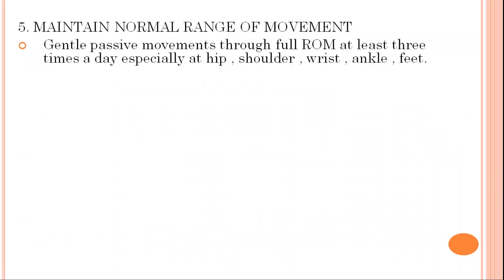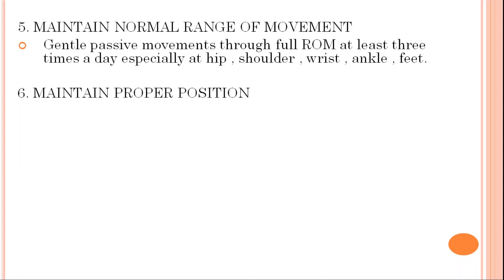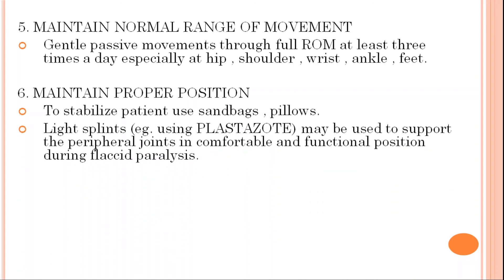Next is maintenance of normal range of movement. For this, gentle passive movements through a full range of motion at least three times a day are given, especially at the hip, shoulder, wrist, ankle, and feet. Maintenance of proper position is important — to stabilize the patient, use sandbags and pillows. Light splints using plastic support may be used to support peripheral joints in a comfortable and functional position during flaccid paralysis.